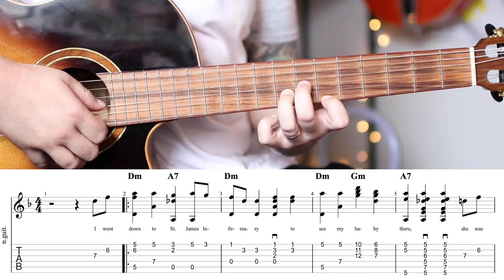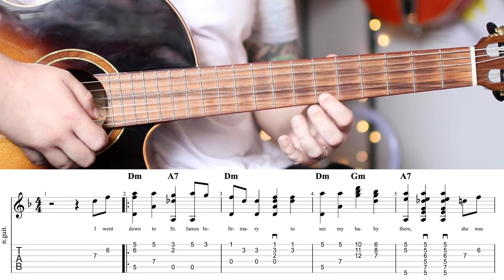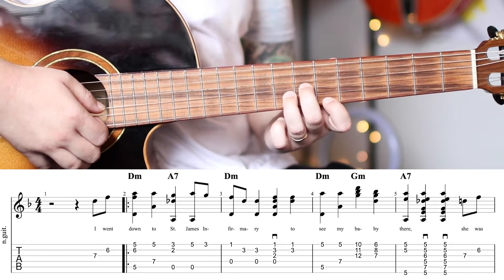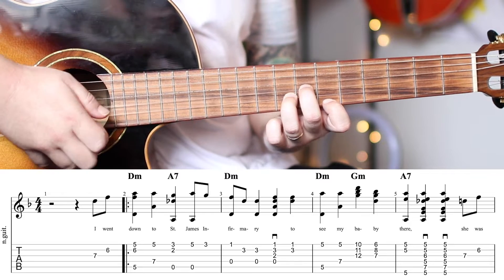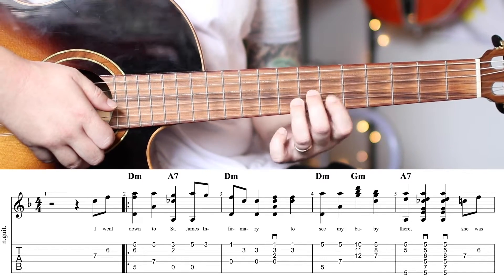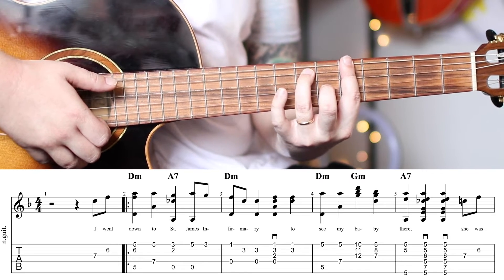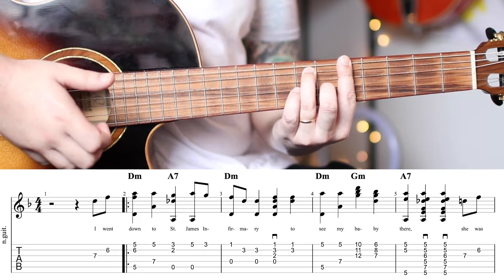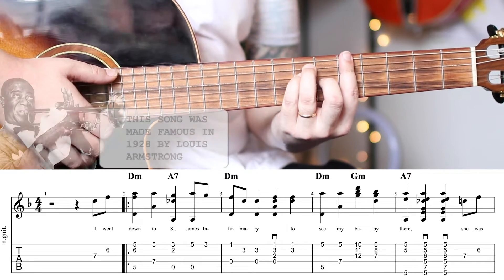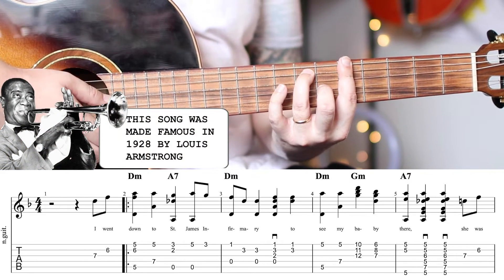We're going to come down here, which is 6th fret of the E, 8th fret of the B, 7th fret of the G, and this is another G minor. Then we make an A7, which comes from this E shape, and then you remove your pinky. So, it's 5, 7, 6, or 5, 7, 5, 6, 5, 5.